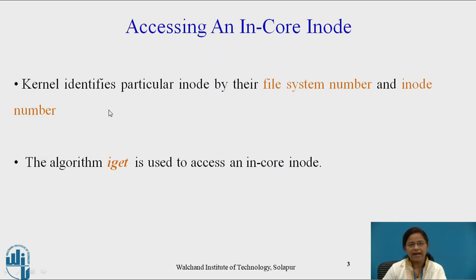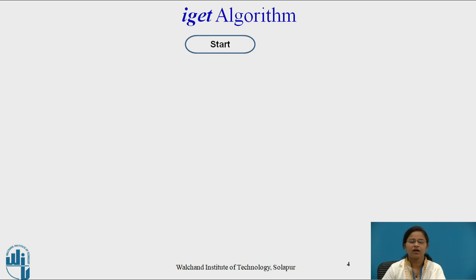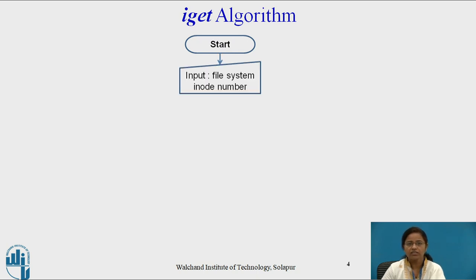The kernel identifies a particular i-node by its file system number and i-node number. The algorithm iGET is used to access an in-core i-node. The iGET algorithm is used to allocate the in-core copy of an i-node, and the input given to the iGET algorithm is the file system i-node number.